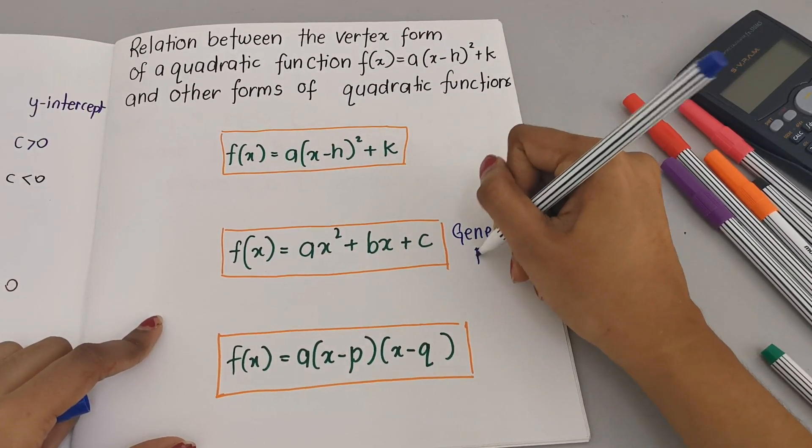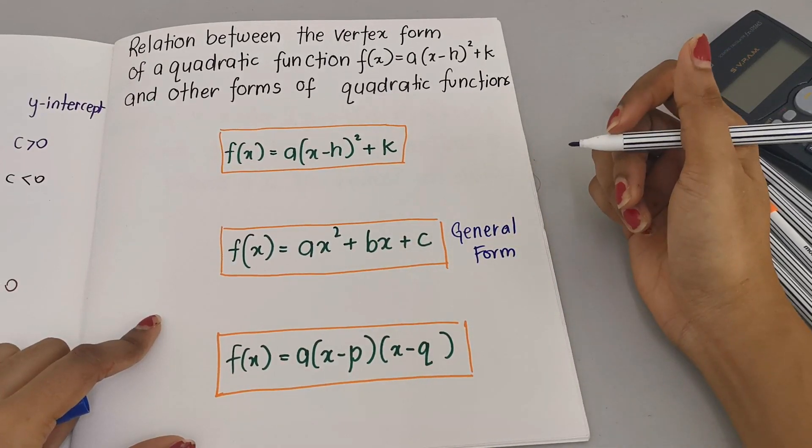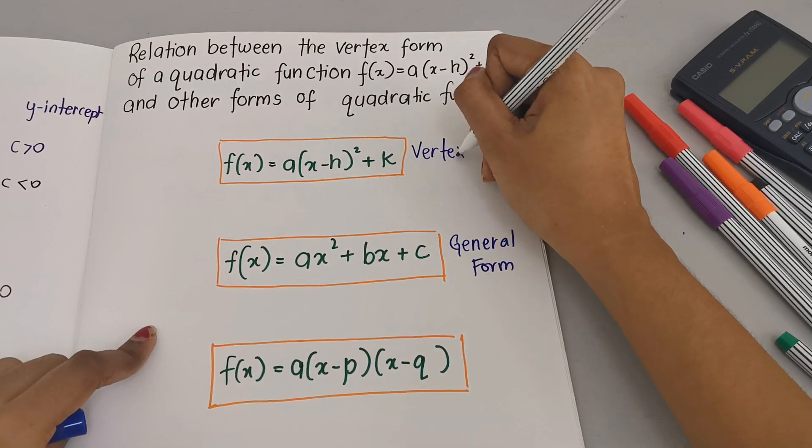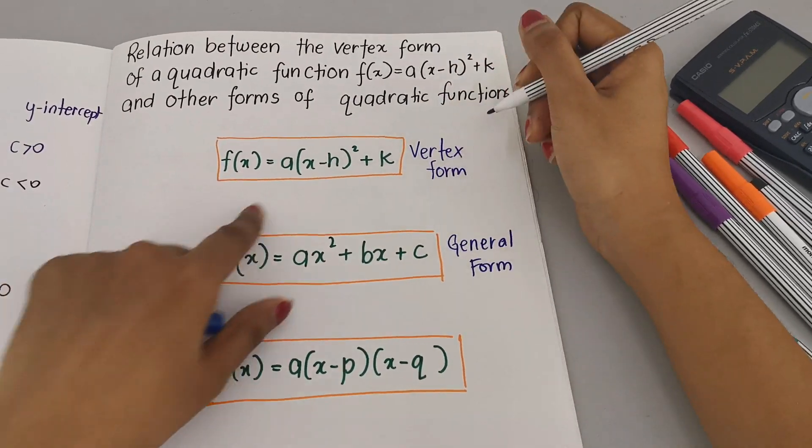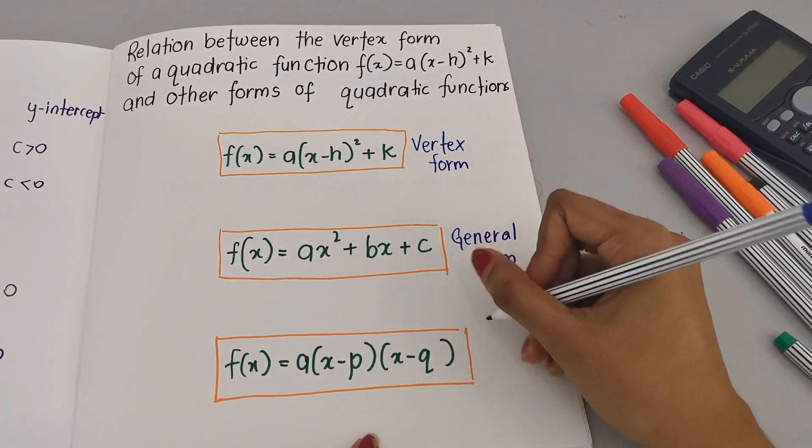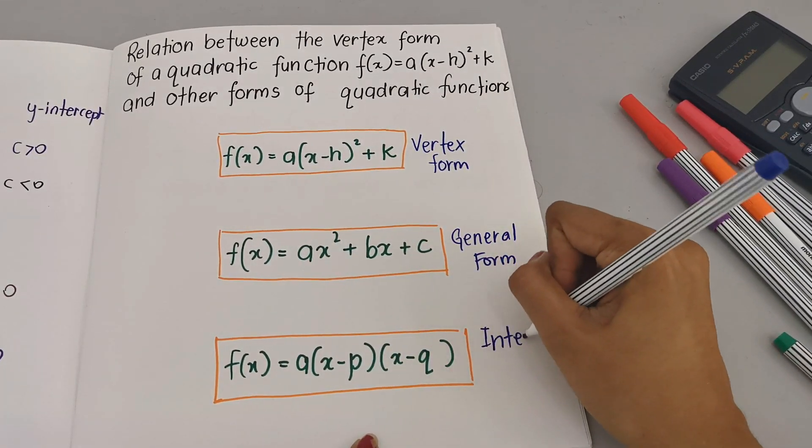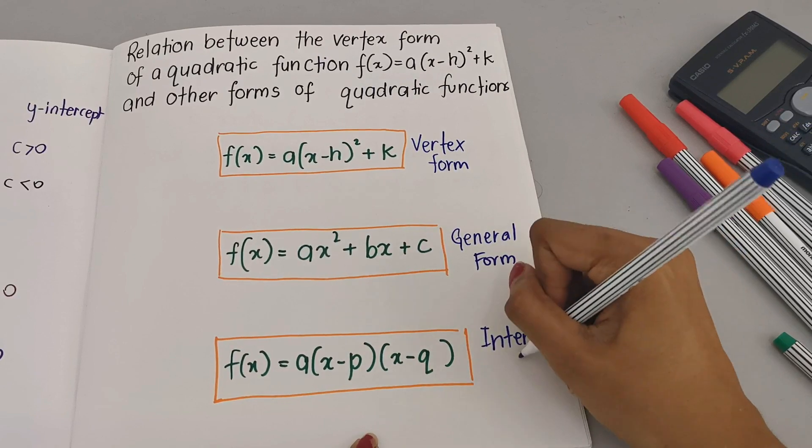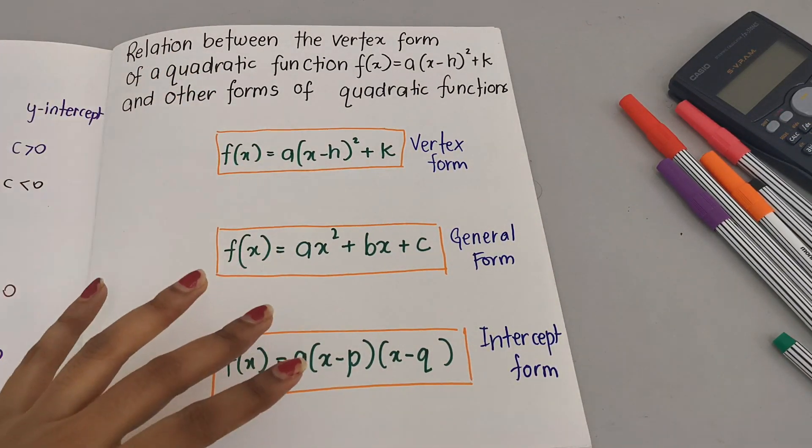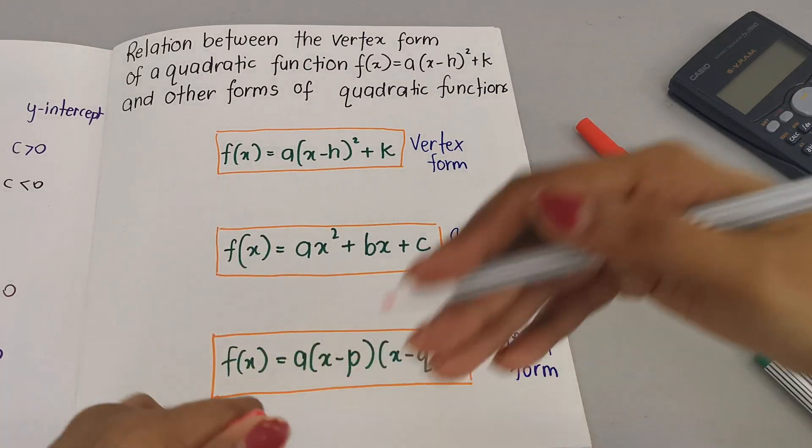Now which one is the vertex form of the quadratic function? This is the vertex form. Please take note very well the difference between the vertex and this one, which is called the intercept form. So if you can identify the different types of forms, you need to know how to change them.